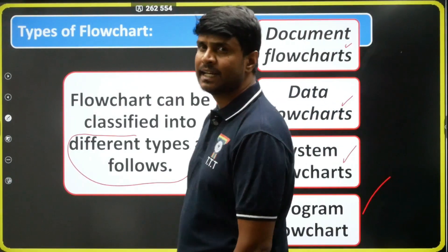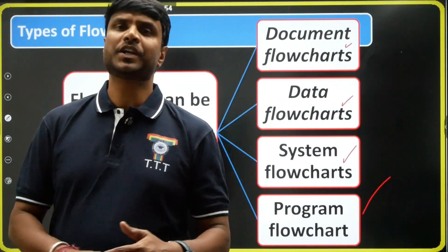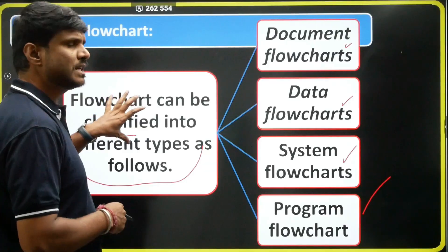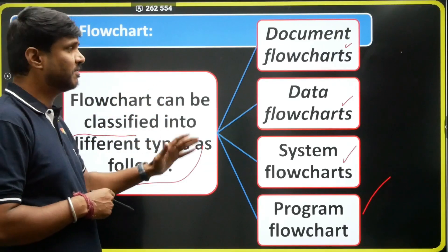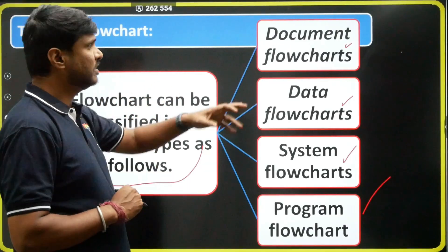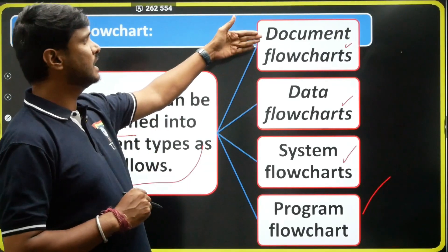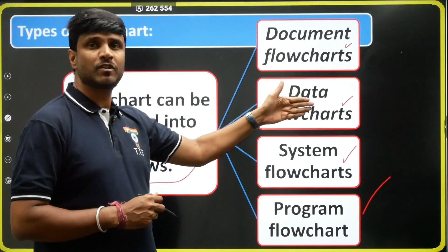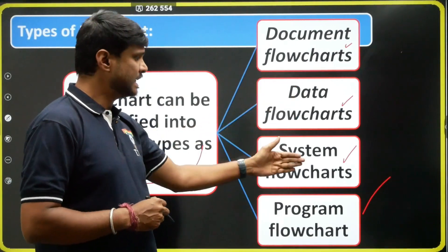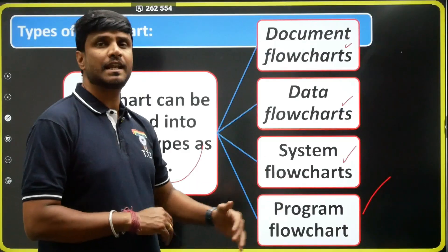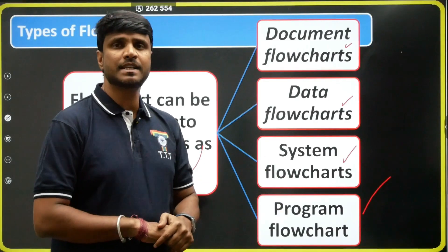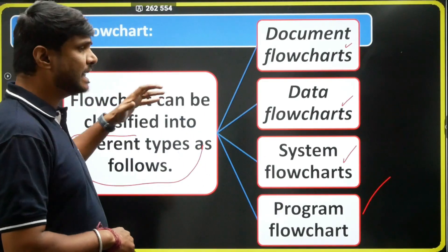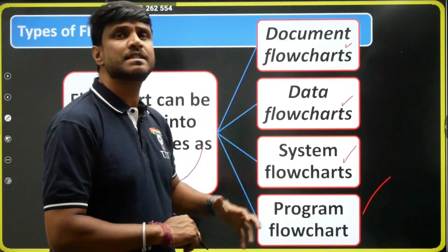These are all the different types of flowcharts we are going to use. So to summarize: flowcharts are again classified into four types — document flowchart, data flowchart, system flowchart, and program flowchart.